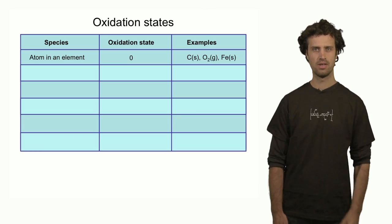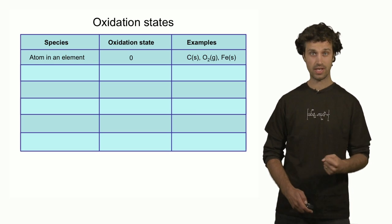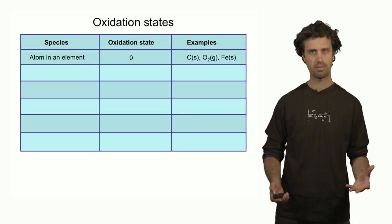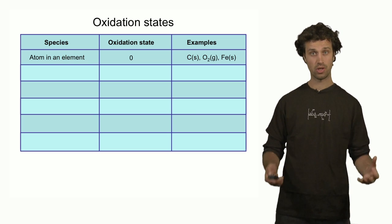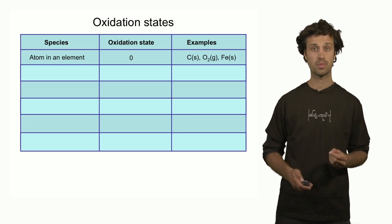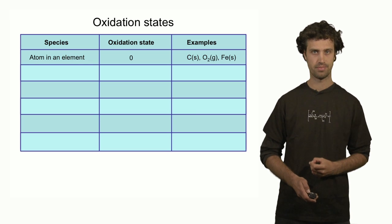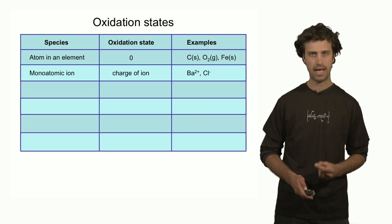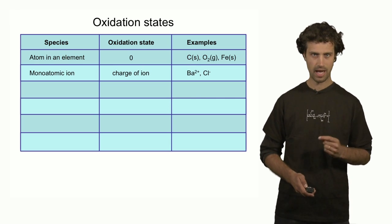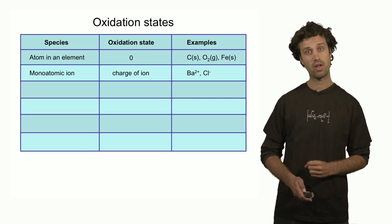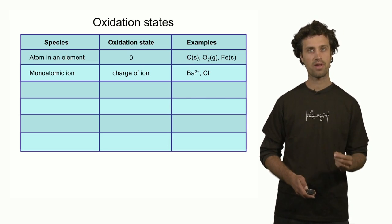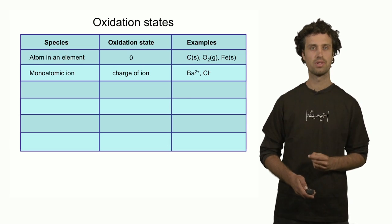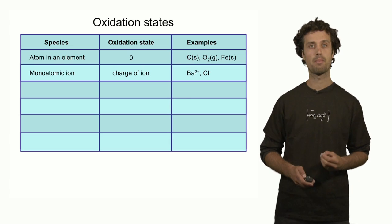To determine this, we need a set of rules. Rule number one we have already seen: the oxidation state of an atom in its elemental form equals zero. Solid carbon, gaseous oxygen, and solid iron are materials in which the atoms have oxidation state zero. Rule number two says that the oxidation state of a monoatomic ion is the same as the value of the charge of that ion. For instance, the oxidation state of barium two plus equals plus two, and the oxidation state of chlorine minus is minus one.